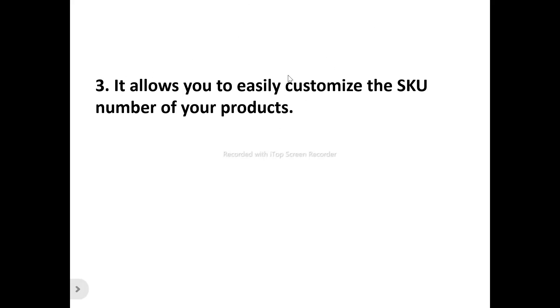Number three: ScanLister allows you to easily customize the SKU number of your product. It gives you the ability to automatically add dates, cost, supplier, price, rank, and the MF ticket number or any other condition you need for your product. So you can easily customize your SKU and add all relevant information to your product listing.